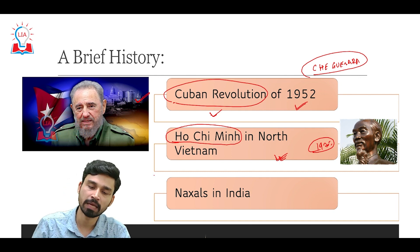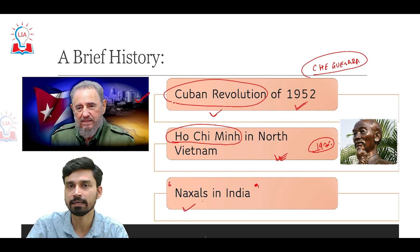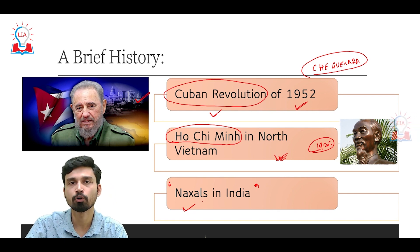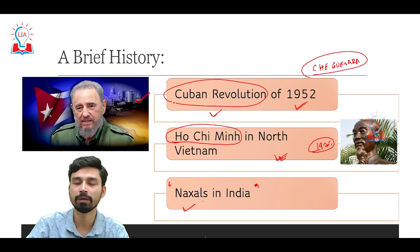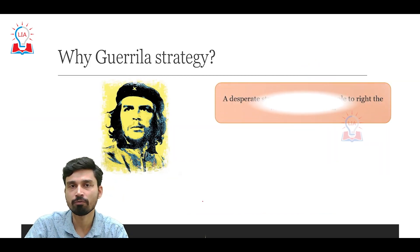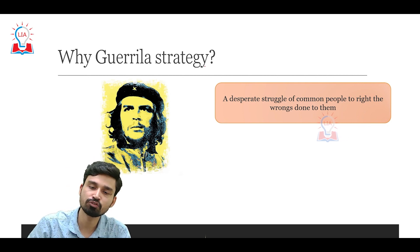Similarly, Naxals in India have adopted guerrilla warfare tactics, aiming for a communist-based revolution and seeking to overthrow the democratically elected government in India. That covers the history of guerrilla warfare, and now the question comes: why are such strategies adopted?